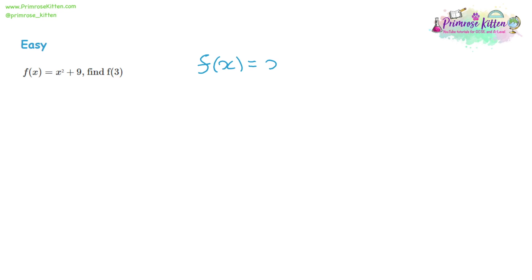So we have a look at our first function. The function of x is equal to x squared plus 9, and we've been asked to find the function of 3. As you can see with the way I've written this, all we're doing is we're swapping x with 3. So really this is just substitution. We have the function of x and I've swapped x with 3. So all we have to do is find every single x and swap it with a 3. That gives us 3 squared plus 9.